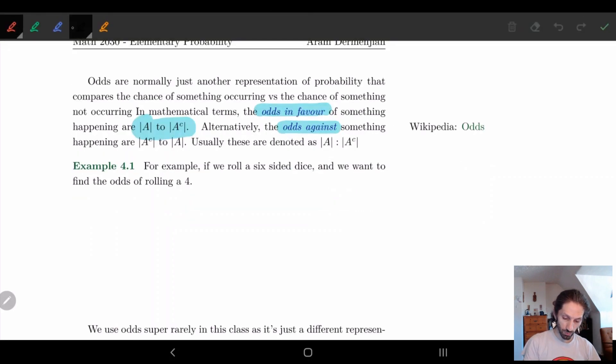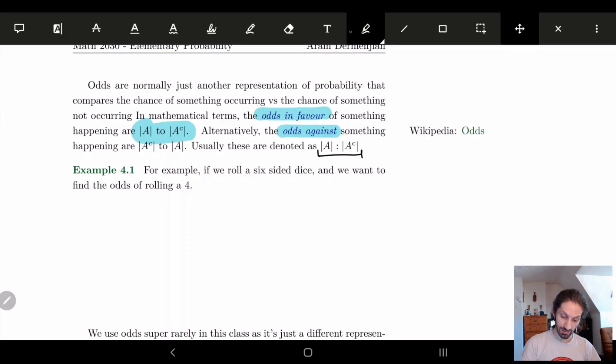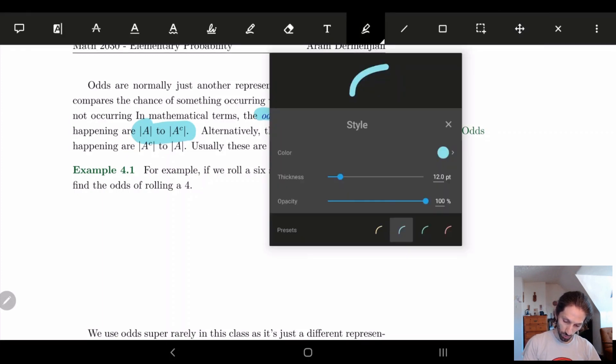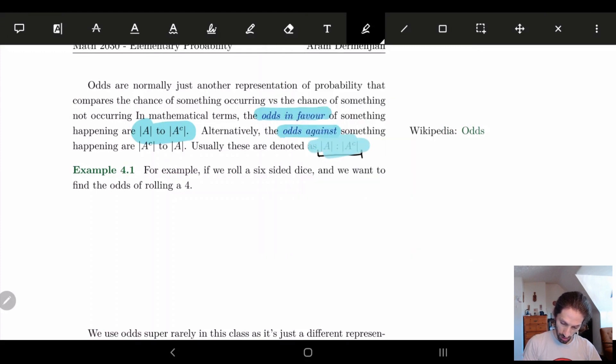So for us what we normally do is we denote it by A colon A complement. We'll highlight this in blue. This is how we normally write this out, and this is kind of best done through an example so we see what we're talking about.